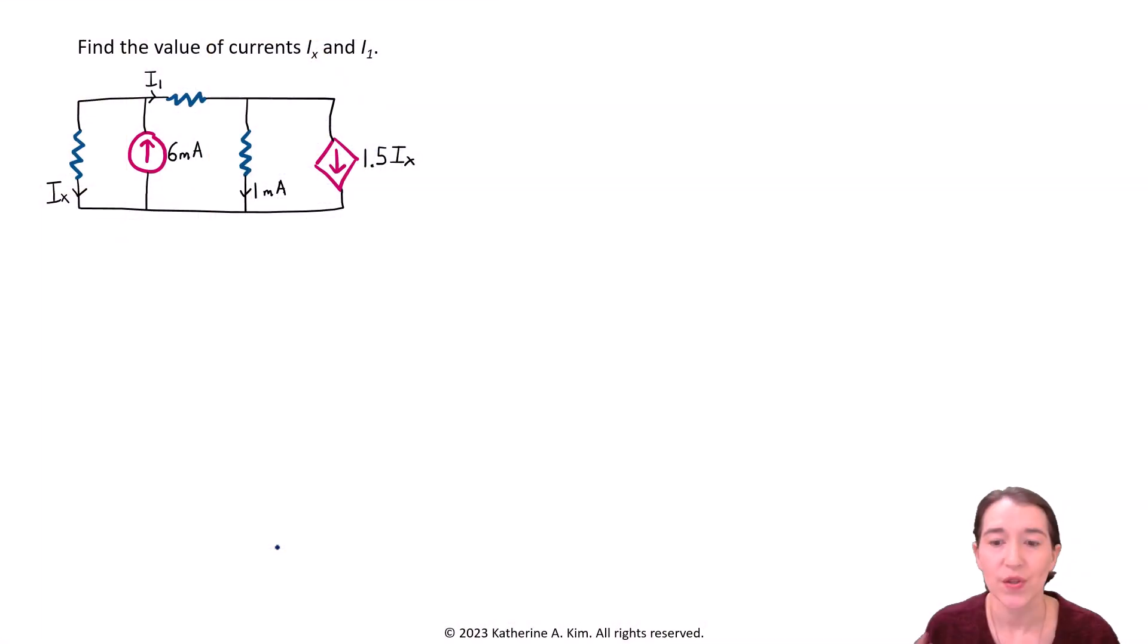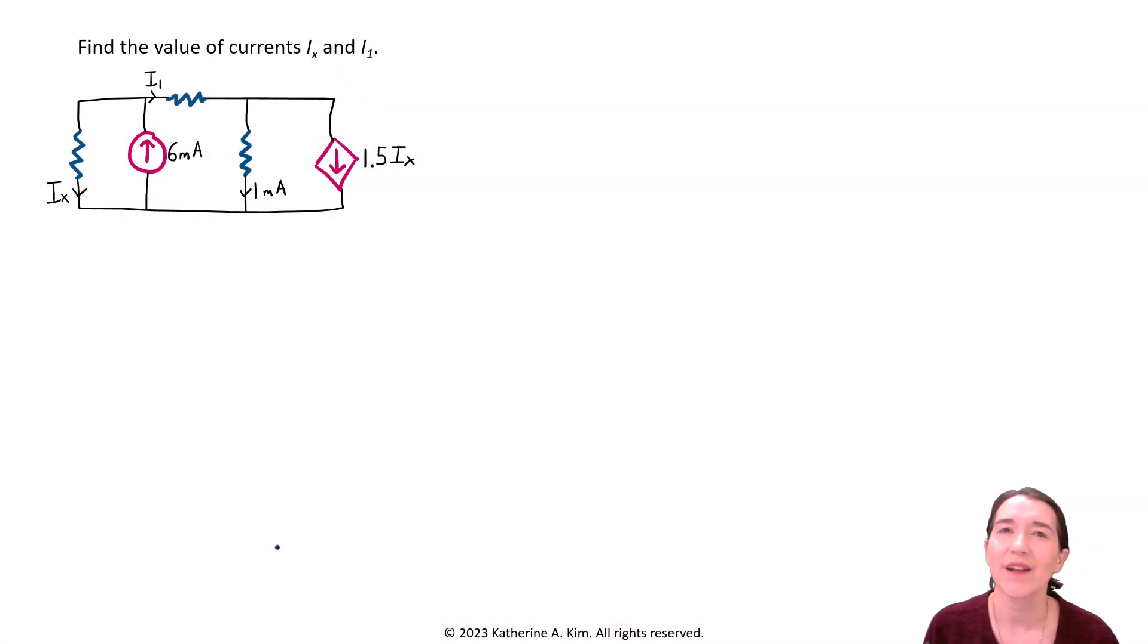And it's E 2.7 in this book, Erwin 12th edition. Okay, let's go. So here's our problem, and the first thing we do is read the problem, look at the circuit, and write down what we need to solve for. So find the values of current Ix and I1.